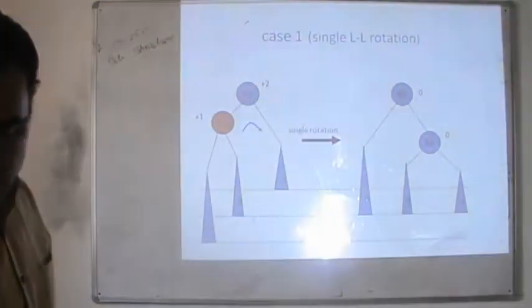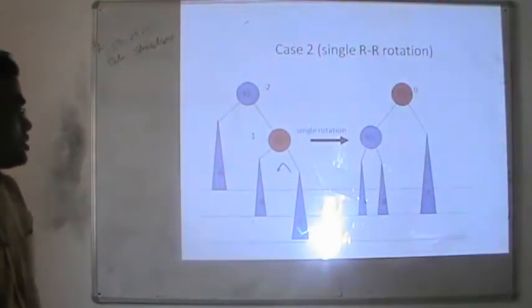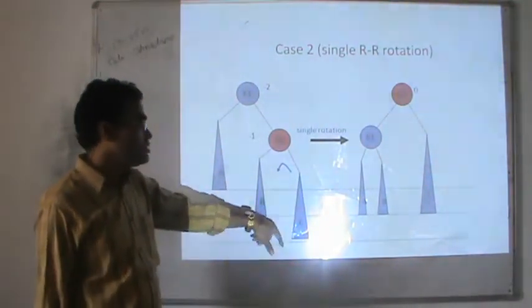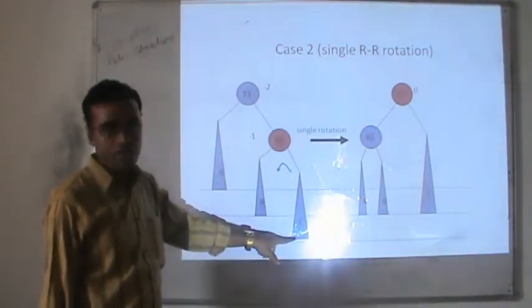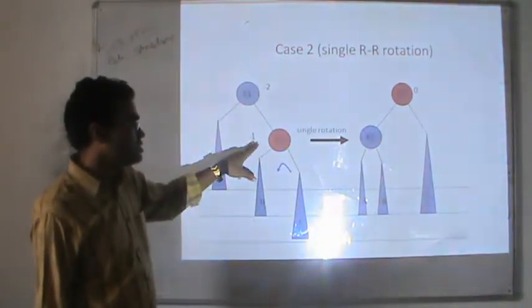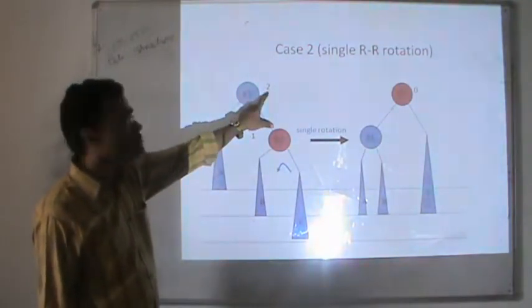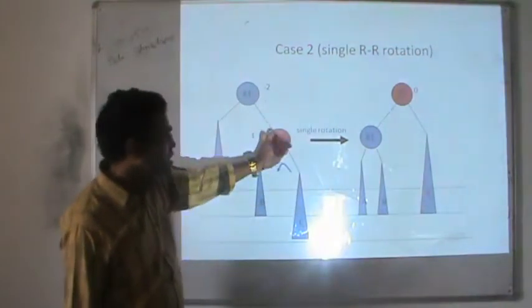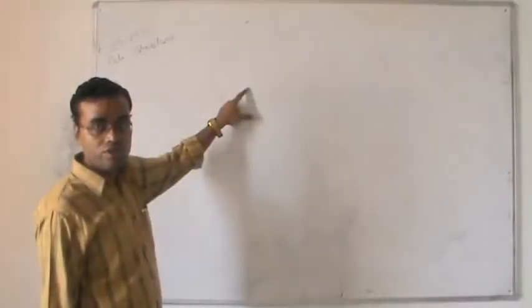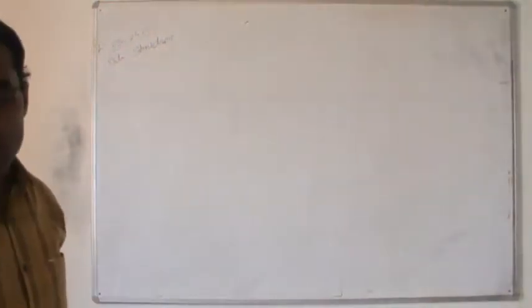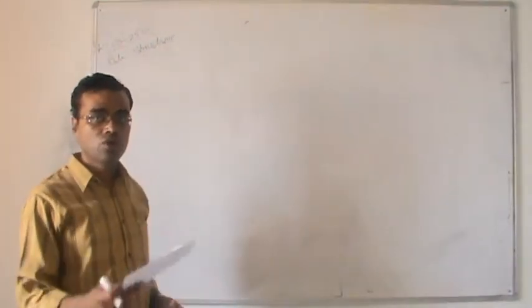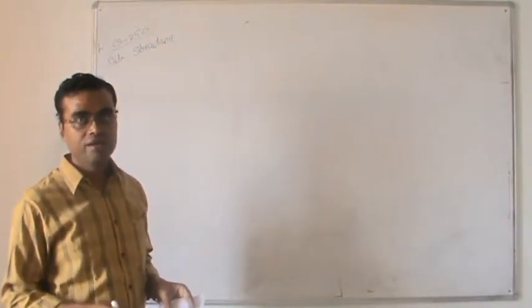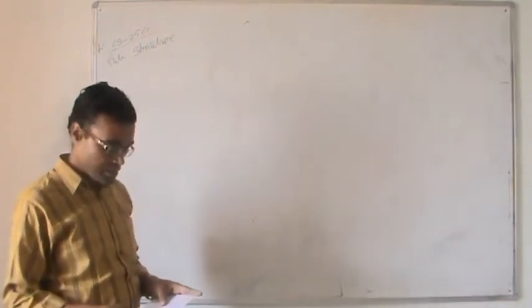Now the RR rotation. In RR rotation, a node is inserted in the right subtree and the balance factor of the critical node K1 becomes minus 2. The newly inserted node is on the right subtree of the right subtree of the critical node. So we need to rotate the whole tree towards the left. After left rotation, the tree gets balanced and we get balance factors of 0, 1, and minus 1.